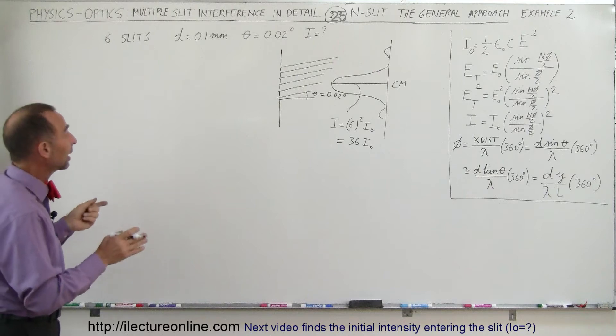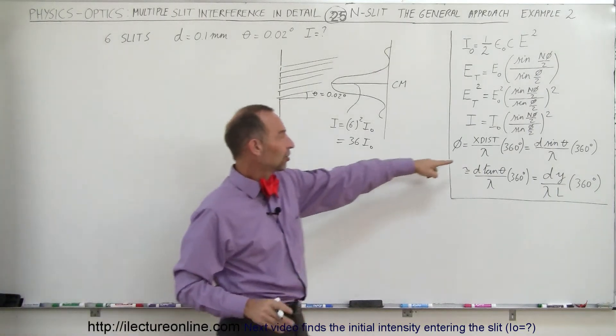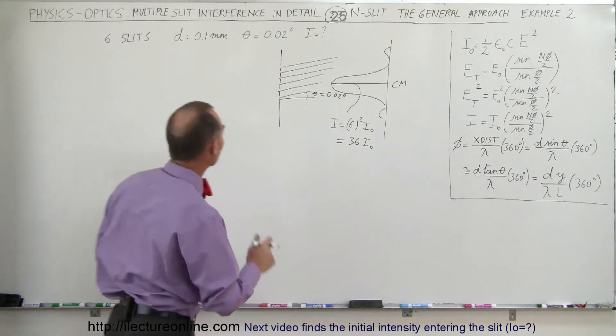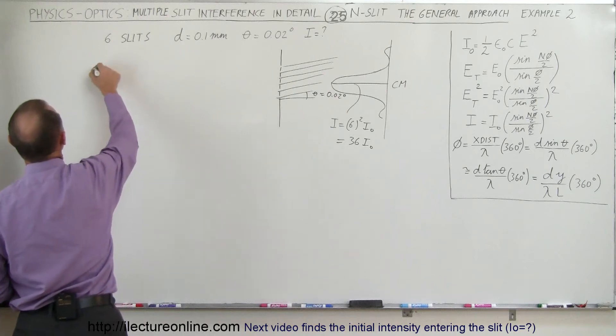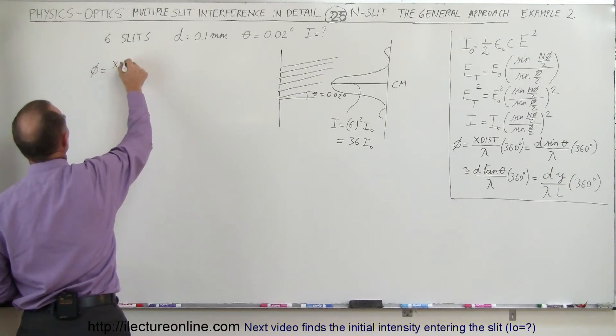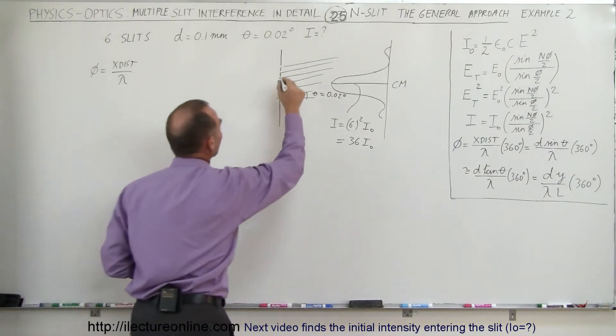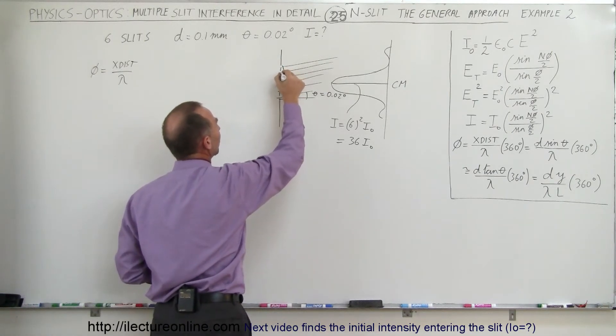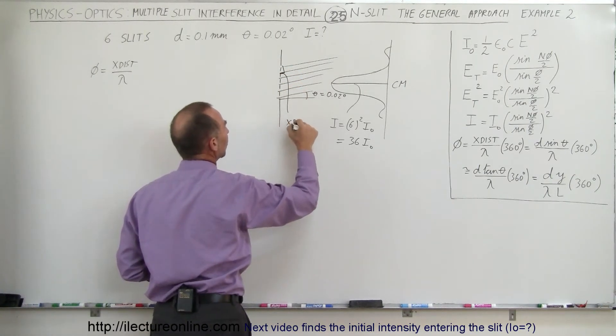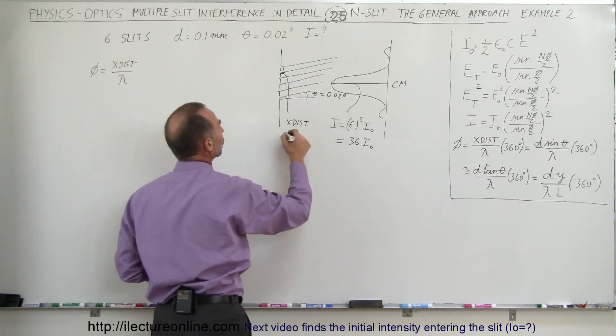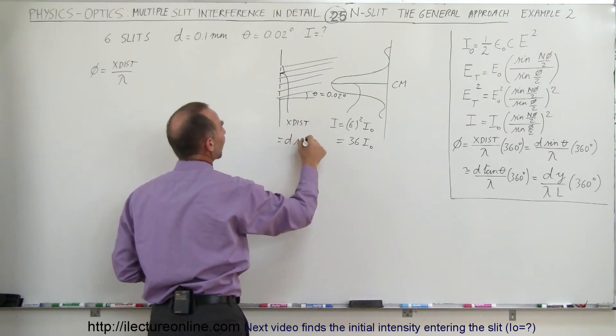Well, first we need to find the phase angle. And the phase angle can be found by using this approach right here. We can say that φ, the phase angle, is equal to the ratio of the extra distance traveled divided by the wavelength. When we talk about the extra distance traveled, we talk about this value right here, extra distance, which is equal to d times the sine of theta.